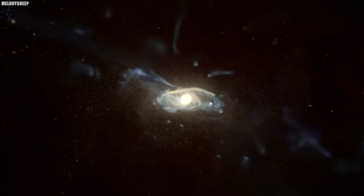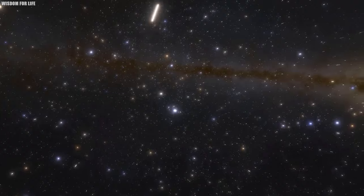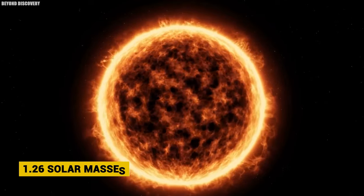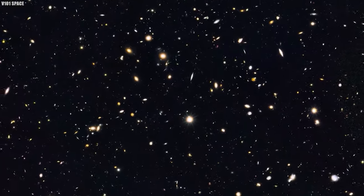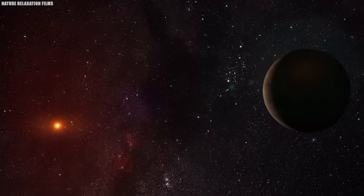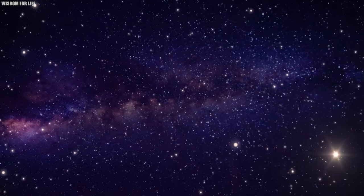Meanwhile, in the cosmic wings, Polaris AB, or P, a closely situated F6 main-sequence star with a mass of 1.26 solar masses, joins the celestial ballet, casting its glow in the cosmic performance.